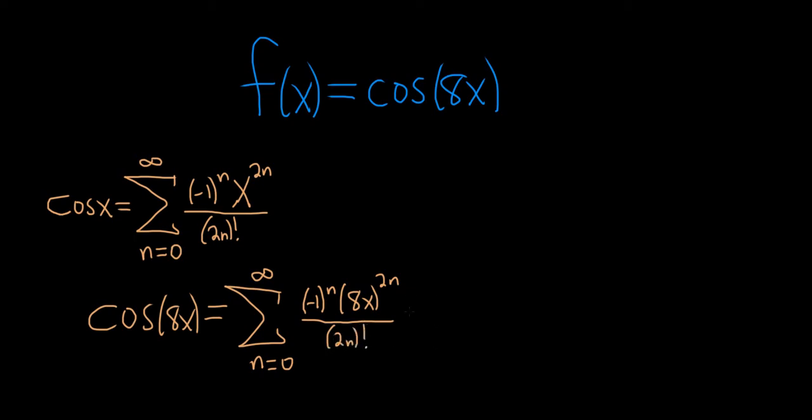And that's pretty good. You could simplify it a little bit more. I'll go ahead and do that. Usually if you have fractions or negatives that are being raised to a power, you usually simplify them. In this case, it's not such a big deal, but I'll go ahead and break it up just a little bit more. So it'll be 8 to the 2n, x to the 2n, and then on the bottom we still have the 2n factorial.